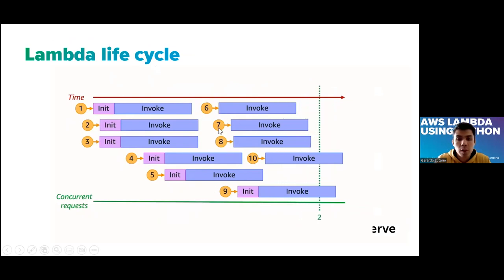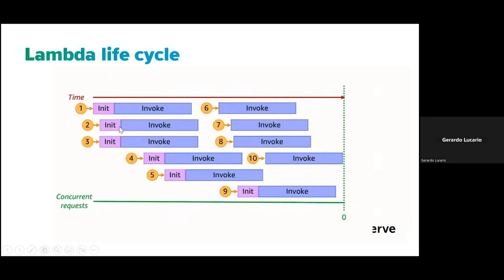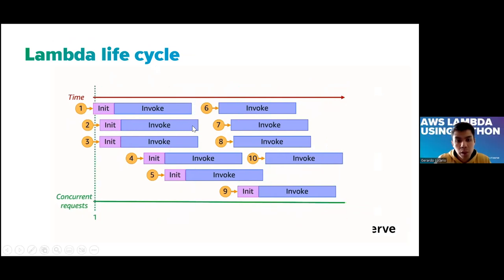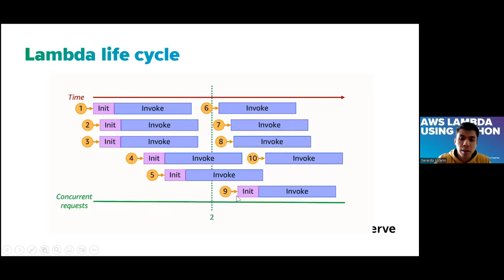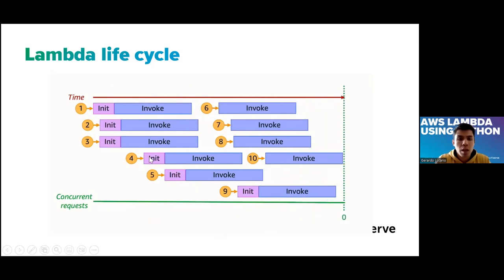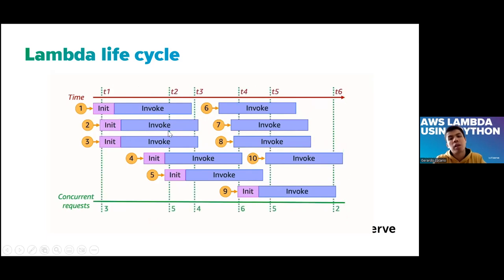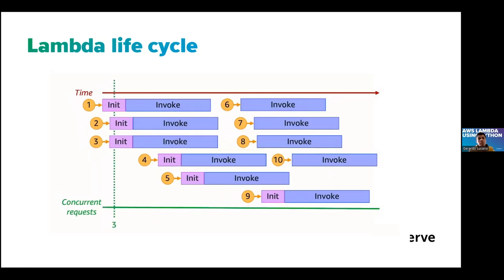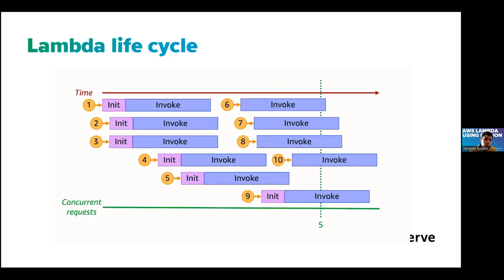Following the example, if another request arrives and we already have a Lambda waiting, that Lambda will be responsible for that request and so on. If we don't have a Lambda free, another Lambda will be created. So, talking about this life cycle, we have three main stages: the first one is initialization, then invoke — consider the code running — and finally the Lambda is killed.